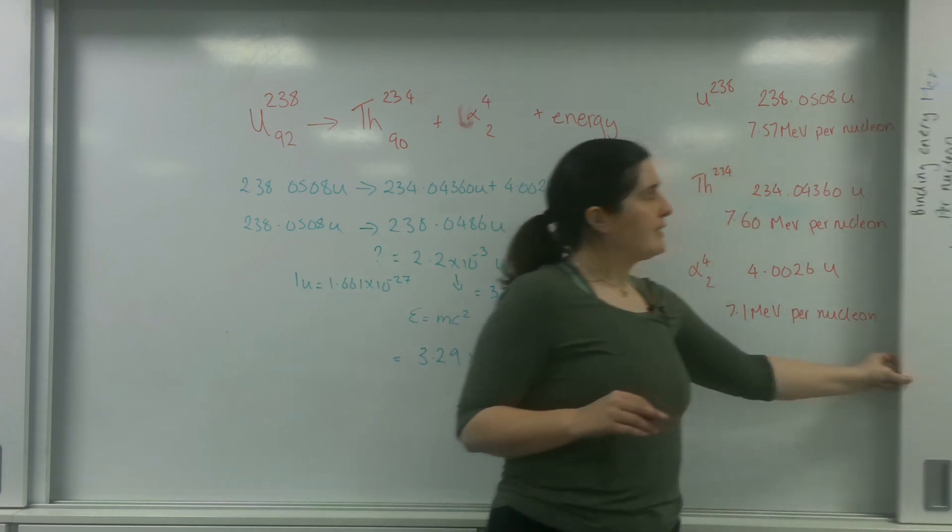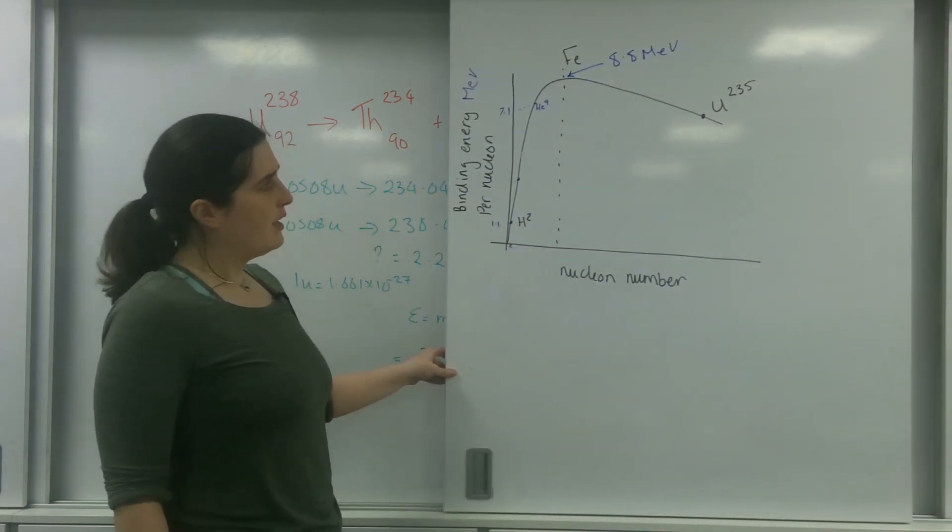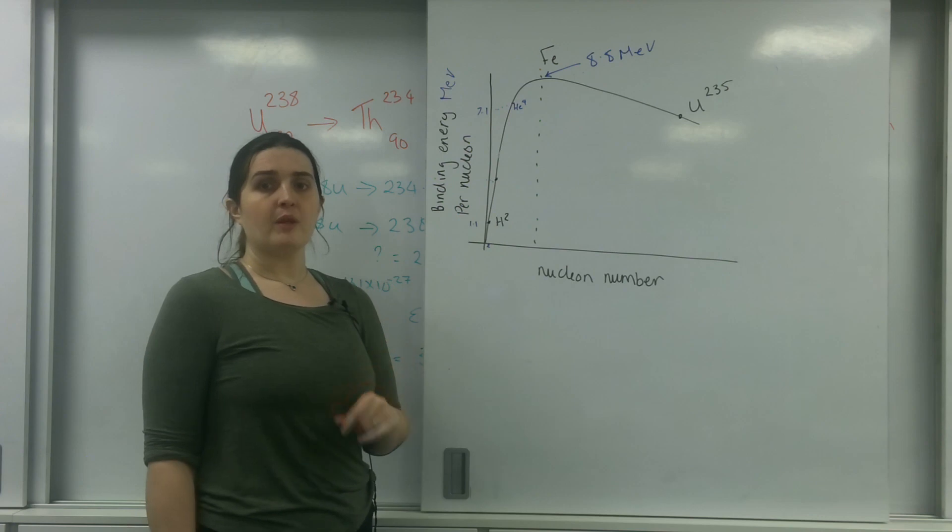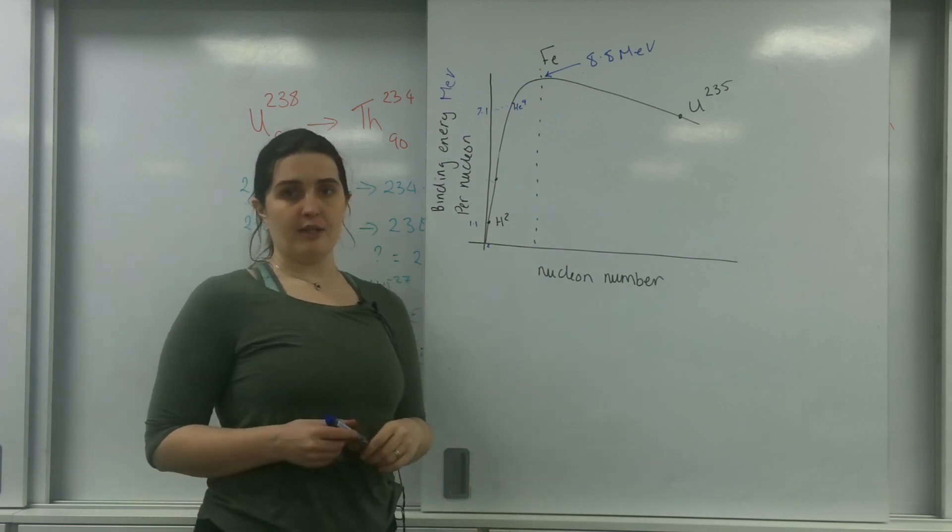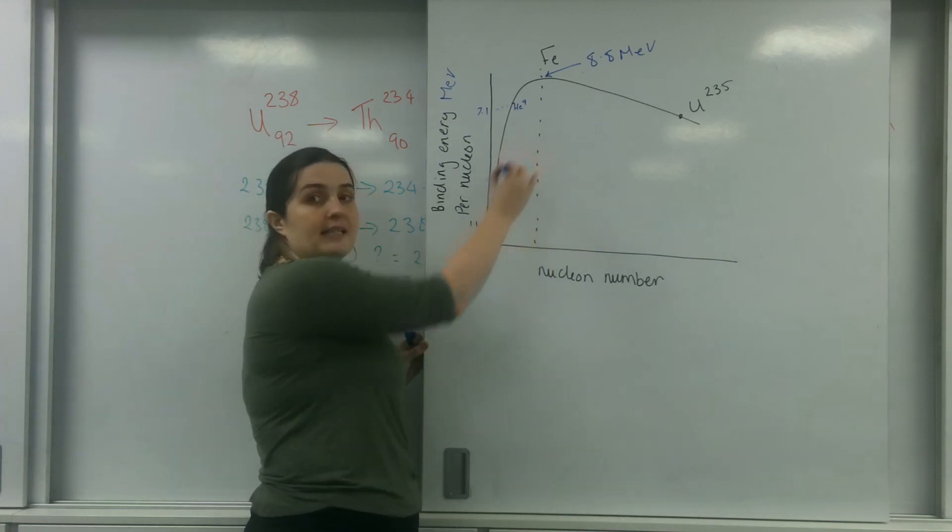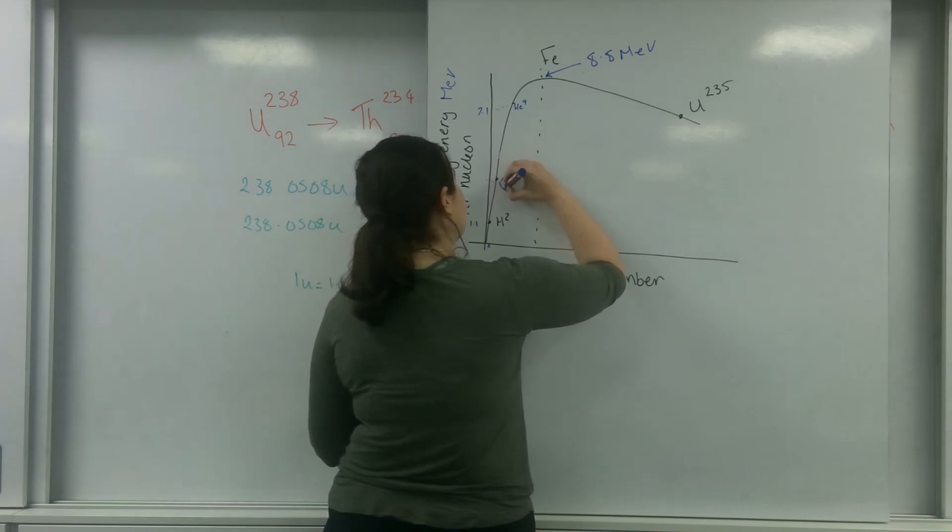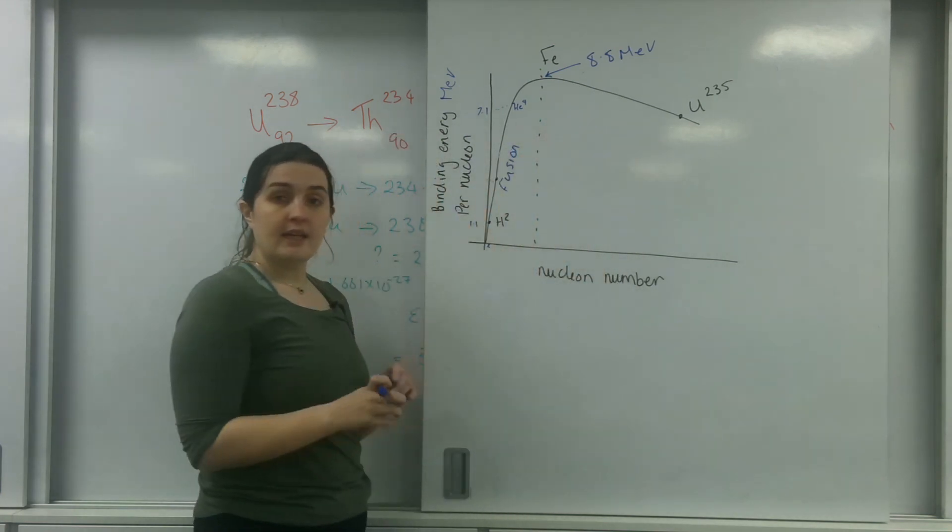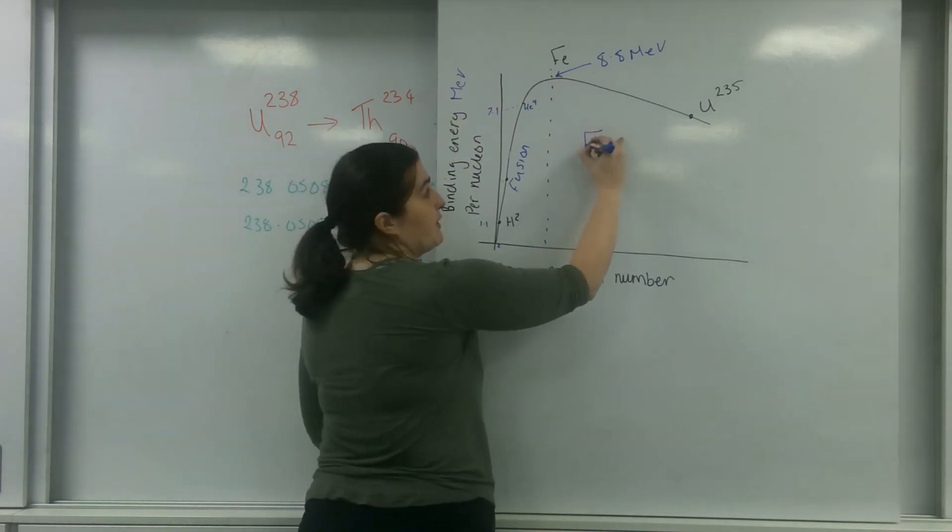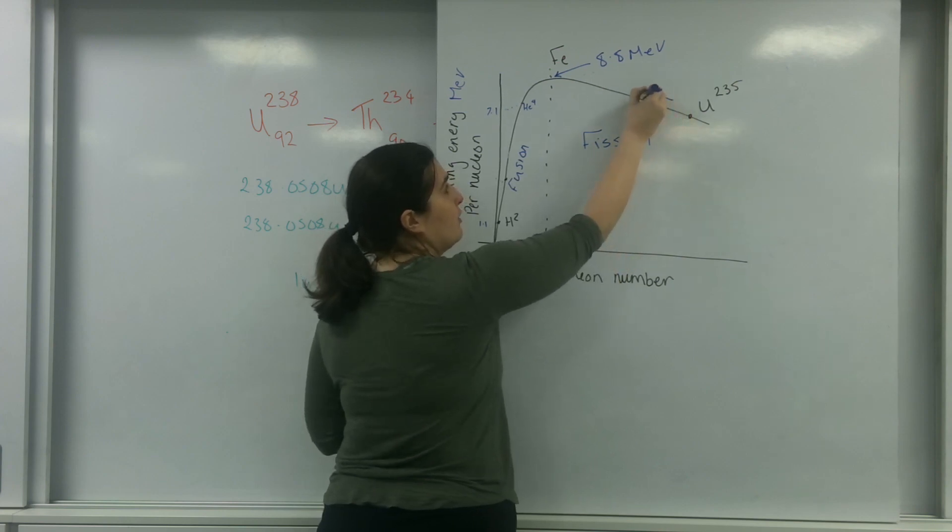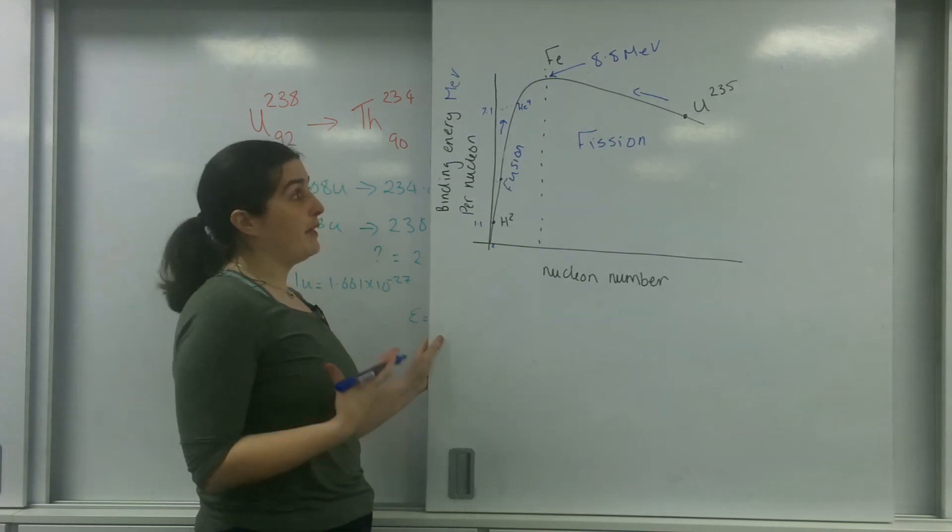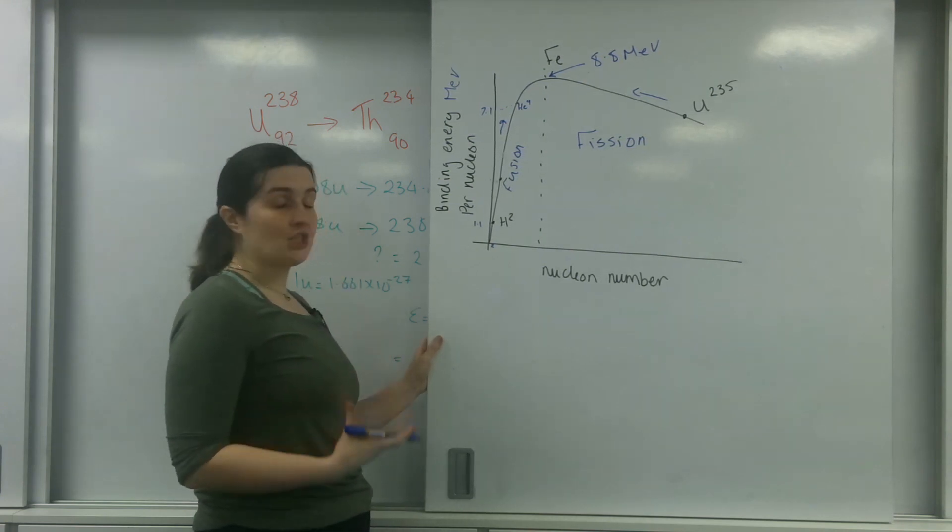This is bringing us back to this graph here. This side of the graph, my binding energy is increasing, which means my strong nuclear force is increasing, which means more energy is going to be released. This side, I get it by getting a bigger nucleon number, and that is for nuclear fusion. This side, the only way that I get a bigger binding energy per nucleon, or total binding energy, is by nuclear fission, by splitting it apart. Because you need your products to have a bigger binding energy than your reactants in total. And that there is nuclear fission.